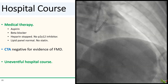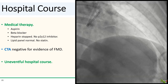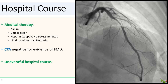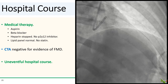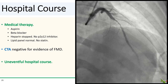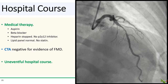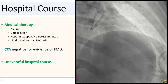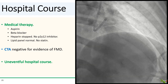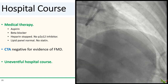Our patient was stable, so we opted to treat her conservatively. We stopped her heparin, started aspirin and a beta blocker, and did not add a P2Y12 inhibitor. Her lipid panel was completely normal, so we did not add a statin. We did do a CTA, which unfortunately was negative for any other vascular abnormalities. She otherwise had a boring, uneventful hospital course and went home a few days later.